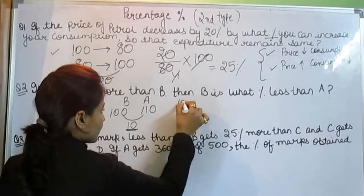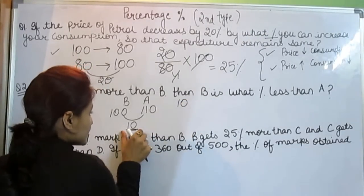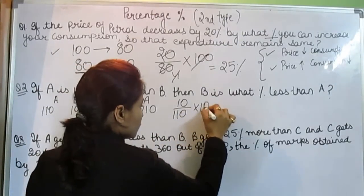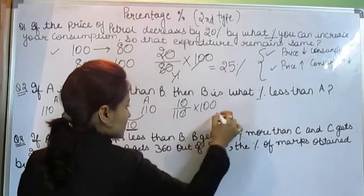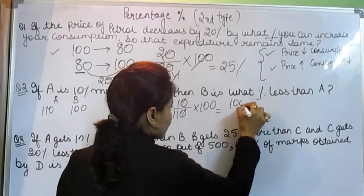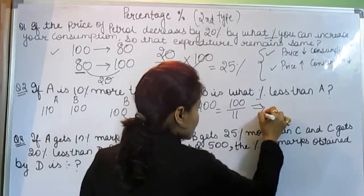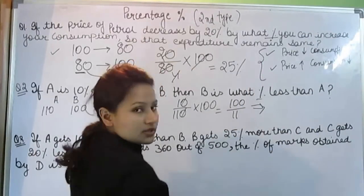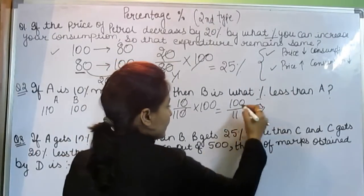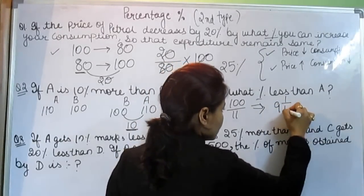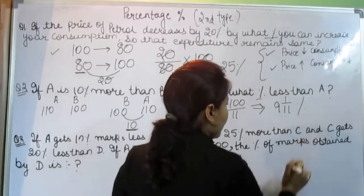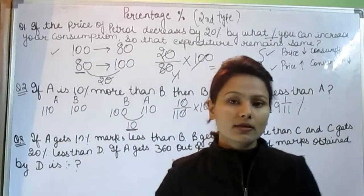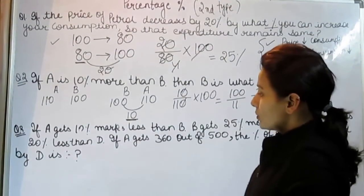This 10 is decreased on 110. We have to get the percent, so 10 over 110 simplifies — we get 100 by 11. As taught in the first type table, B is 100/11 percent less than A.